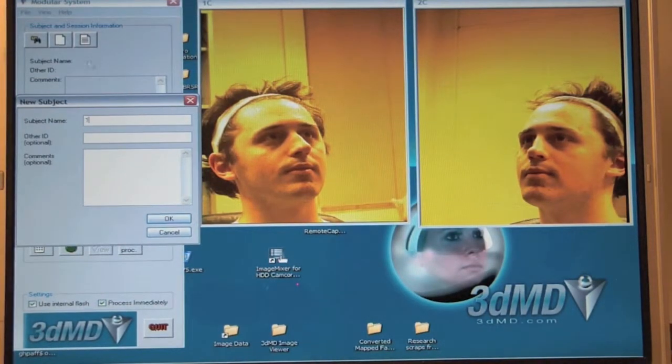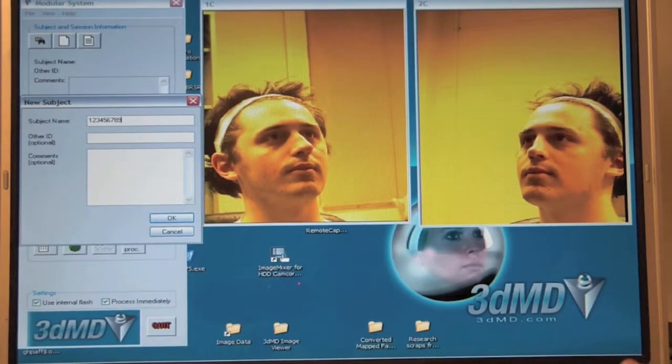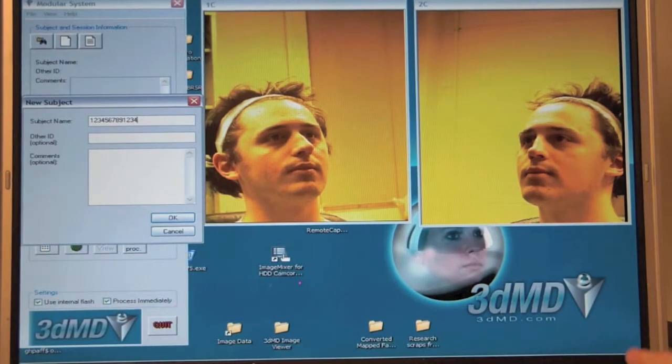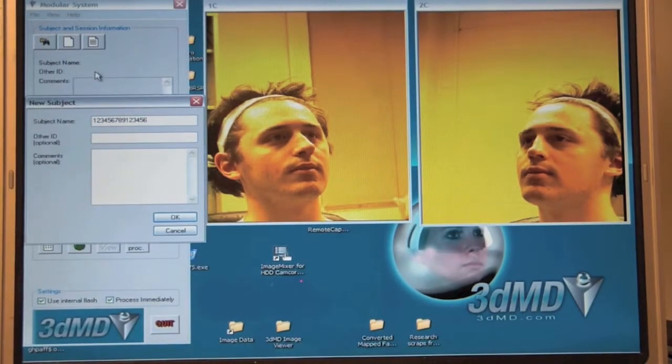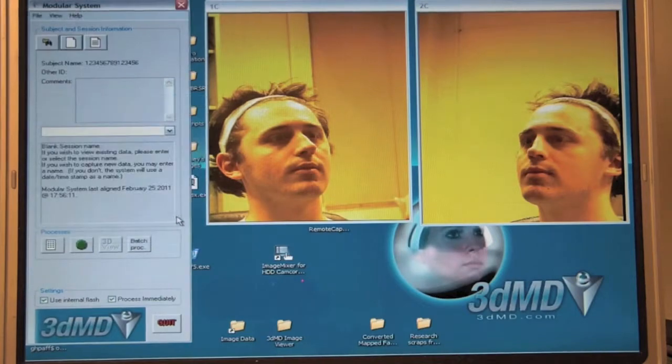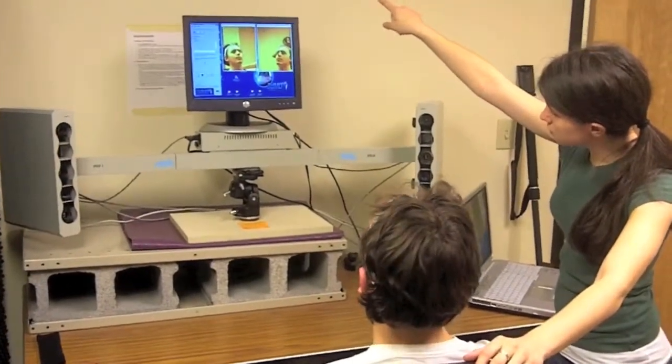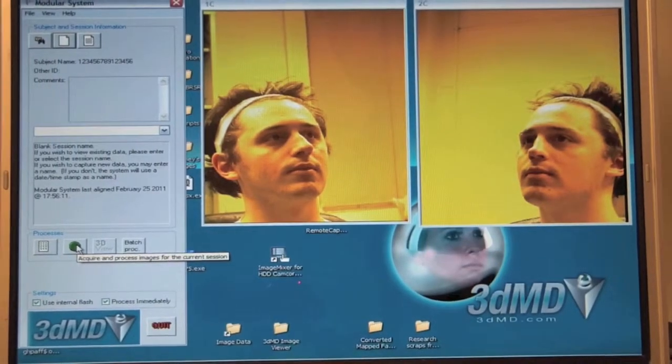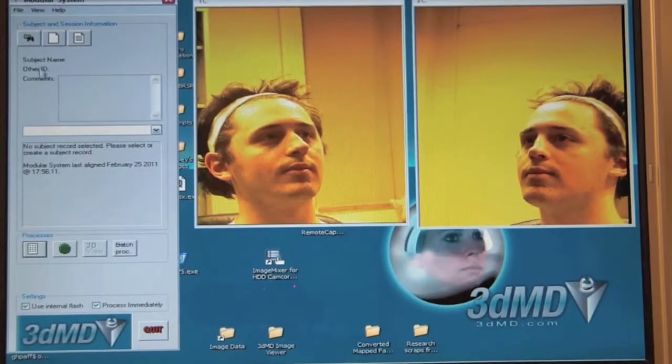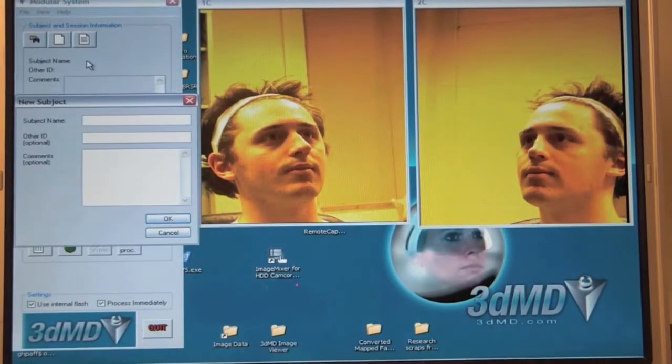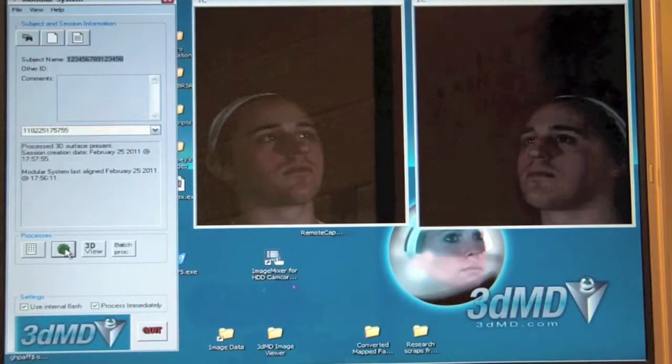Taking Photos: Make sure that the internal flash box is checked. Click Input New Subject icon, the icon that looks like a blank sheet of paper. Enter the subject's participant ID number as the subject's name. Move the subject until their face is centered in both camera windows. Ask the subject to tilt his or her chin up slightly. Ask the subject not to smile. Click the green button to capture. Take a second photo with the subject smiling. Make sure that for each new subject, a new folder is created by clicking the Input New Subject icon.